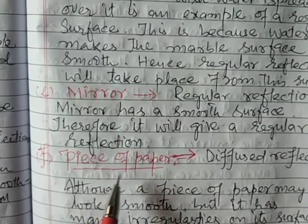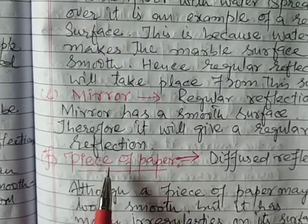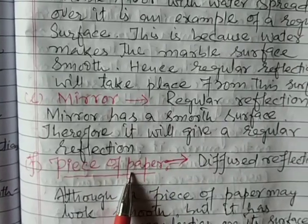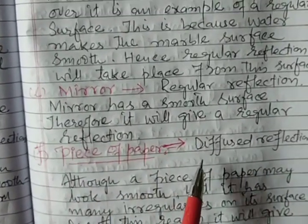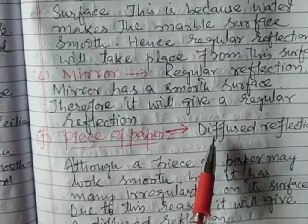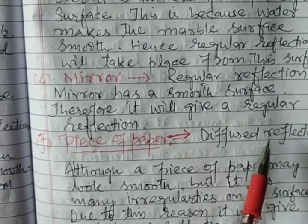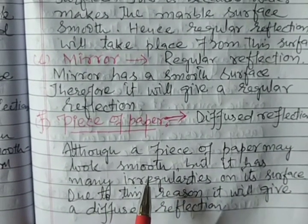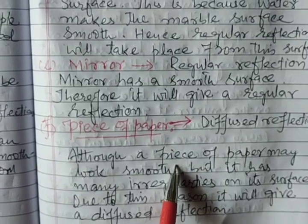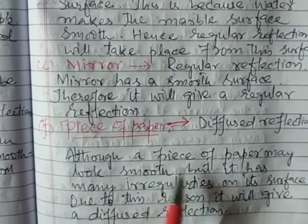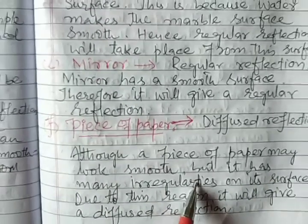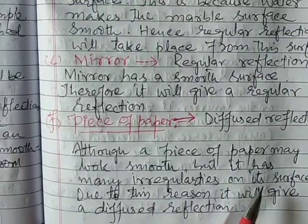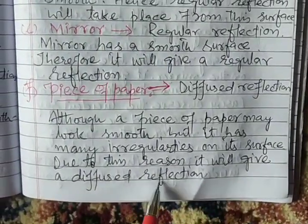Part F: A piece of paper. Although a piece of paper may look smooth, it has many irregularities on its surface. Due to this reason, a piece of paper will give diffused reflection, not regular reflection.